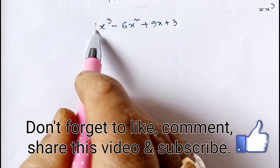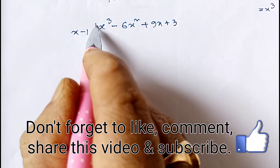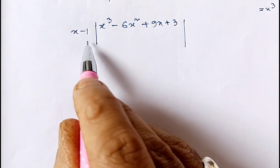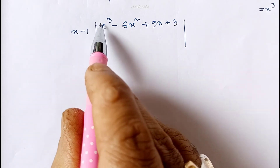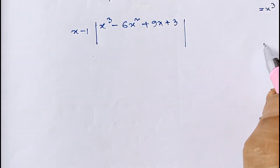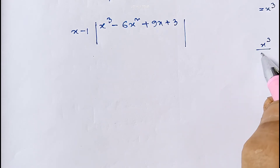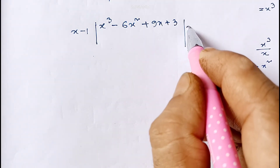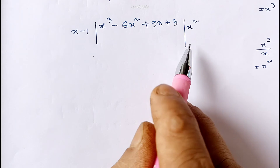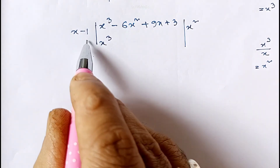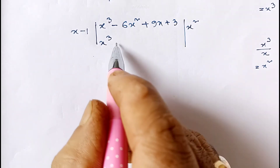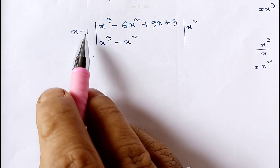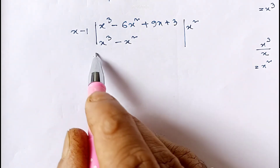When we divide x³ - 6x² + 9x + 3 by x - 1, in the first step we divide x³ by x, which gives x². Then x into x² gives x³, and 1 into x² gives minus x². So we write x² as the first term of the quotient.